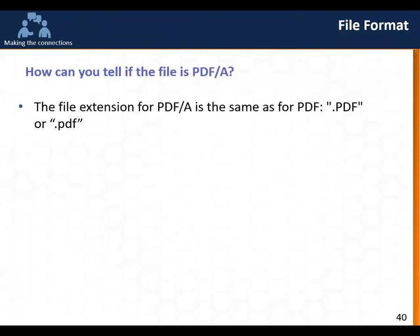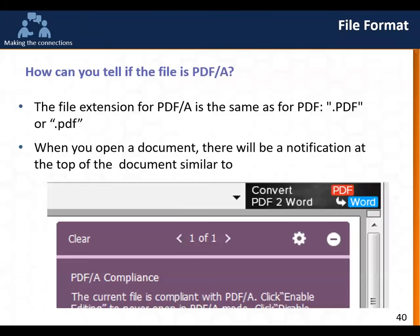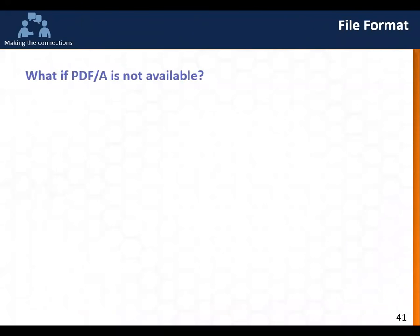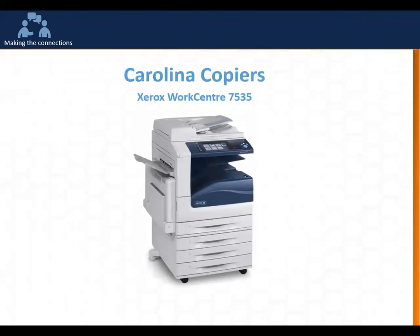PDF/A does not include features requiring external software — no encryption, no active links for external references, no JavaScript. The rationale is that everything you need to render the file will be inside the file itself, years into the future. How can you tell if a file is PDF/A? The file extension is the same as a regular PDF — .PDF. However, when you open a PDF/A document, there will be a notification at the top saying the file is compliant with PDF/A. If your scanner doesn't have PDF/A, we recommend saving as regular PDF.